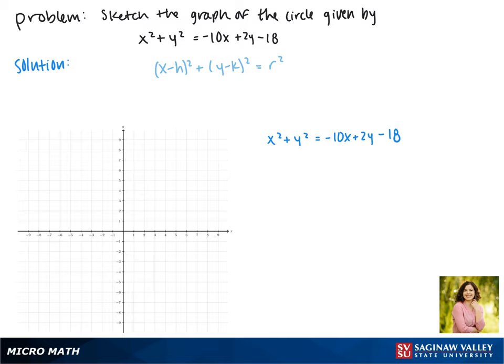We'll start by moving all of our variables to the same side and we'll leave space for those constants that come from completing the square. This gives us x squared plus 10x plus some number plus y squared minus 2y plus some other number equals negative 18 plus each of the numbers.